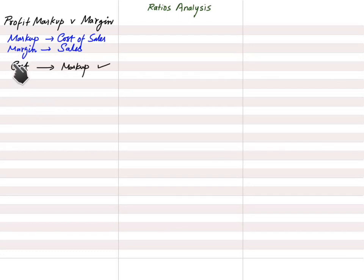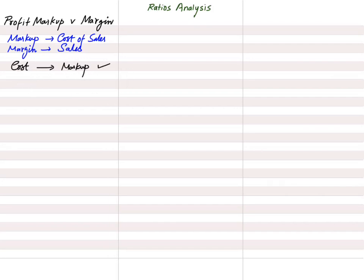If the cost is given in the question and a markup percentage is given, there is no issue — we simply multiply the percentage by the cost of sales to get profit. Similarly, if the sales value or selling price is given and the margin percentage is given, there is no issue at all.